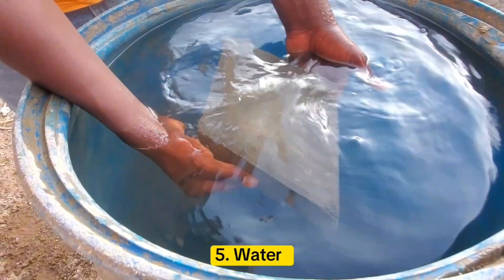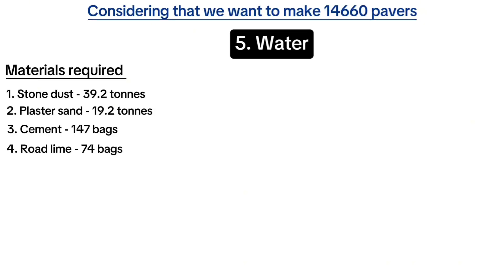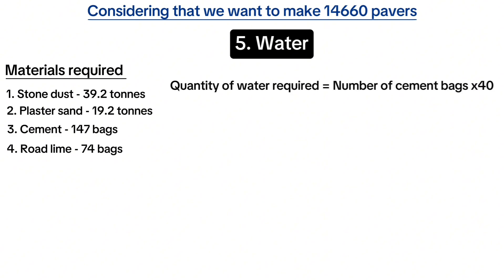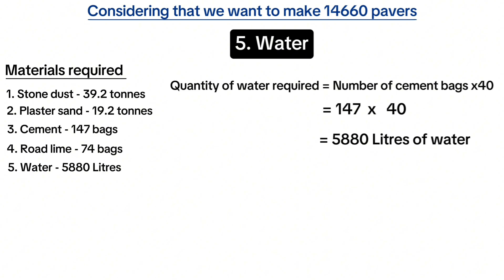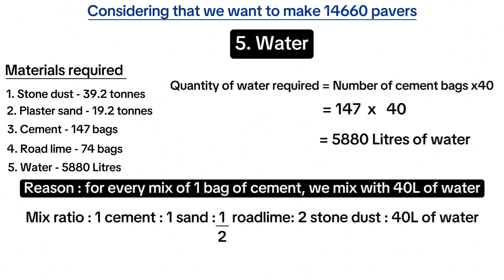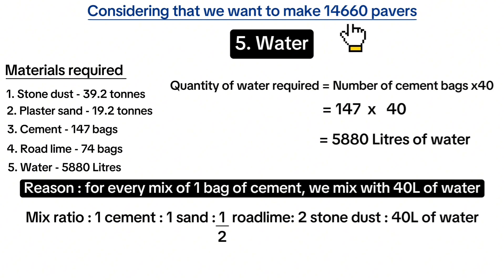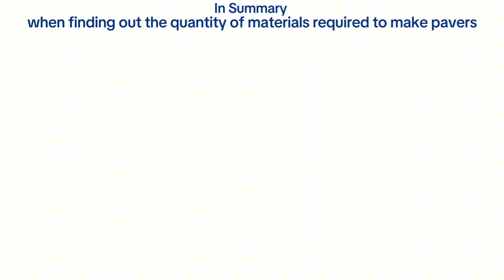The fifth material we need is water. The quantity of water required equals the number of bags of cement multiplied by 40, that is 147 bags multiplied by 40 to get 5,880 liters of water. This is because for every mix of one bag of cement, stone dust, plaster sand, and road lime, we mix with 40 liters of water. Therefore, for 14,660 pavers, you need 5,880 liters of water — enough to make the required pavers.